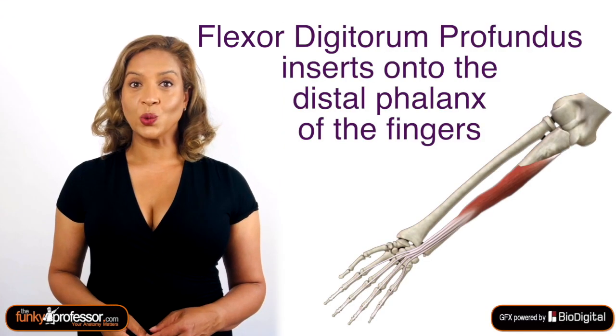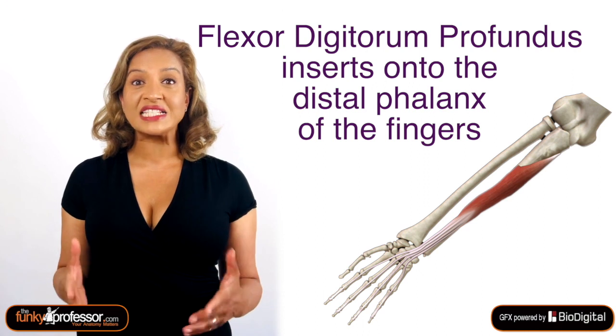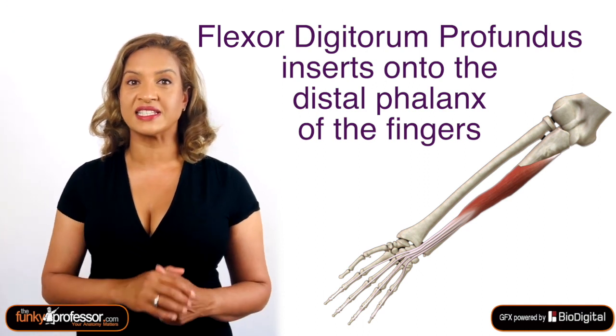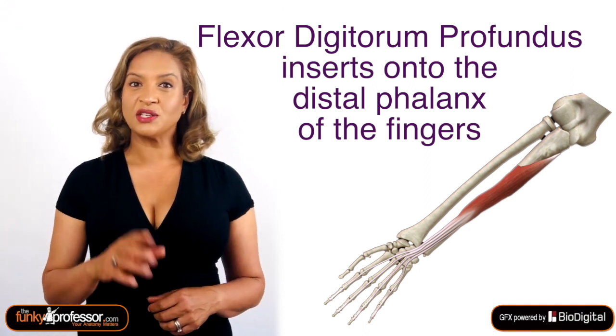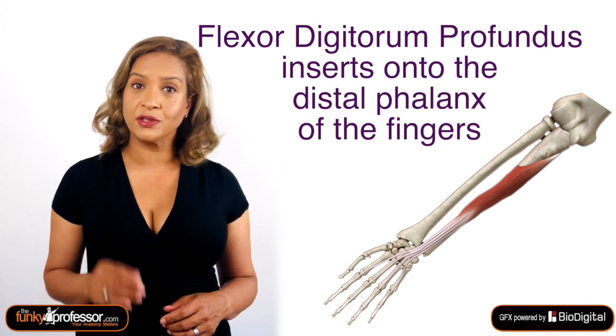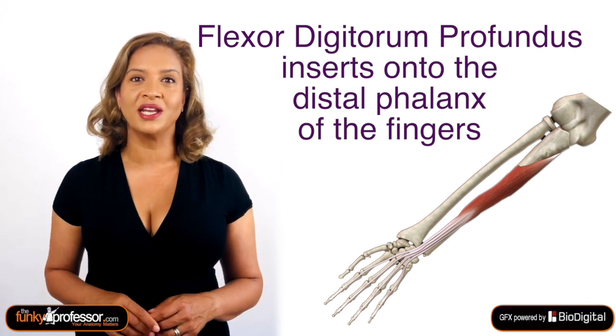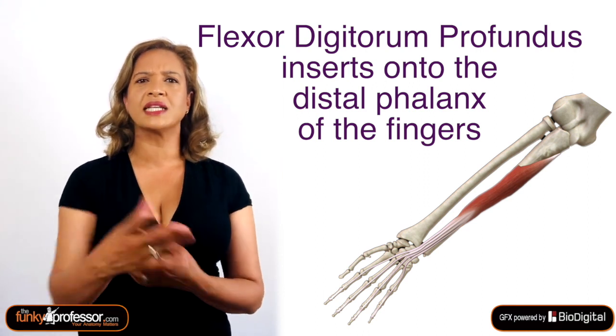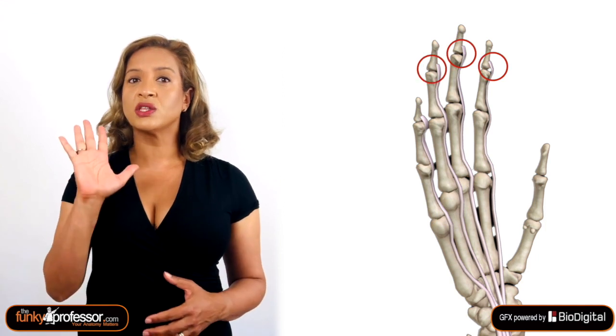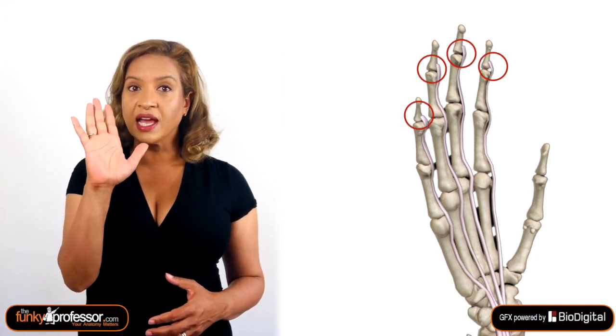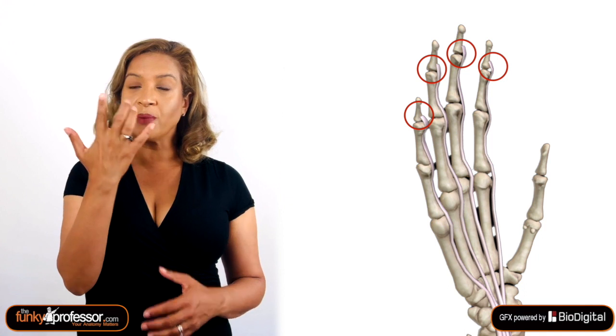The answer to question 2 is of course flexor digitorum profundus. This arises from the ulna bone and parts of the interosseous membrane and forms long slender tendons inserted onto the distal phalanges, so that when it contracts it bends the tip of the fingers and also bends at the interphalangeal joint. This is the muscle that you need to help you pick your nose.